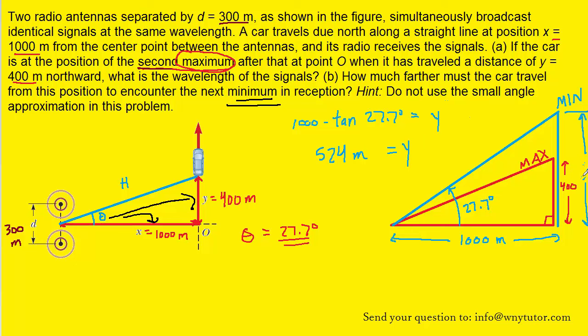So think about how much farther the car has to drive to get to that minimum. Remember, it was right here originally at 400 meters. Now it needs to drive up to 524 meters. So the distance, the additional distance it has to go is simply 524 minus 400.